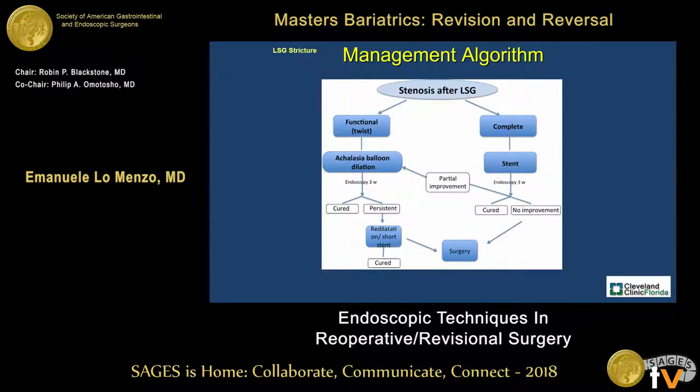The management algorithm: the main thing is figuring out if there's a twist or not. If there's a twist, start with an achalasia balloon and reevaluate a few weeks later. Potentially, if there's persistence of that area, put a stent — although the chance of having to take the patient back to the operating room becomes much higher — as opposed to when there's just a stricture due to stenosis or edema that can be stented and ballooned, which probably has a much higher likelihood of lasting over time.